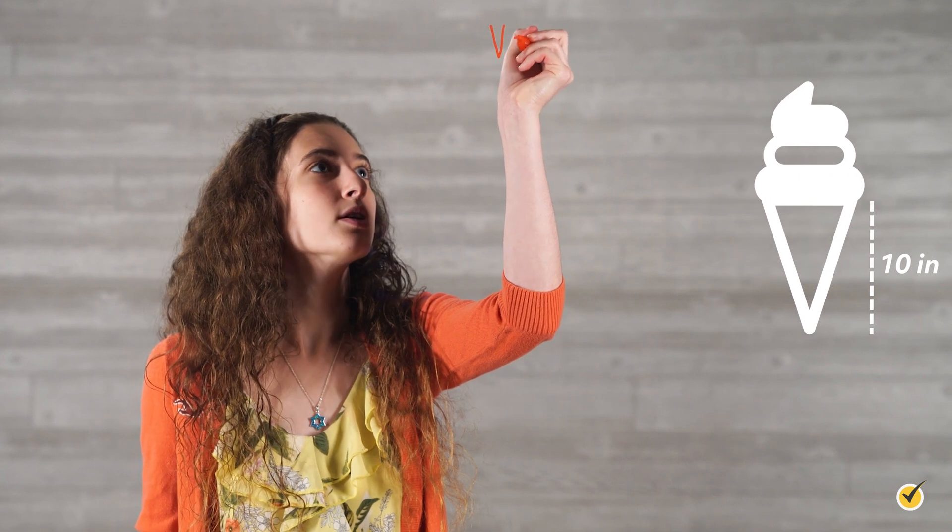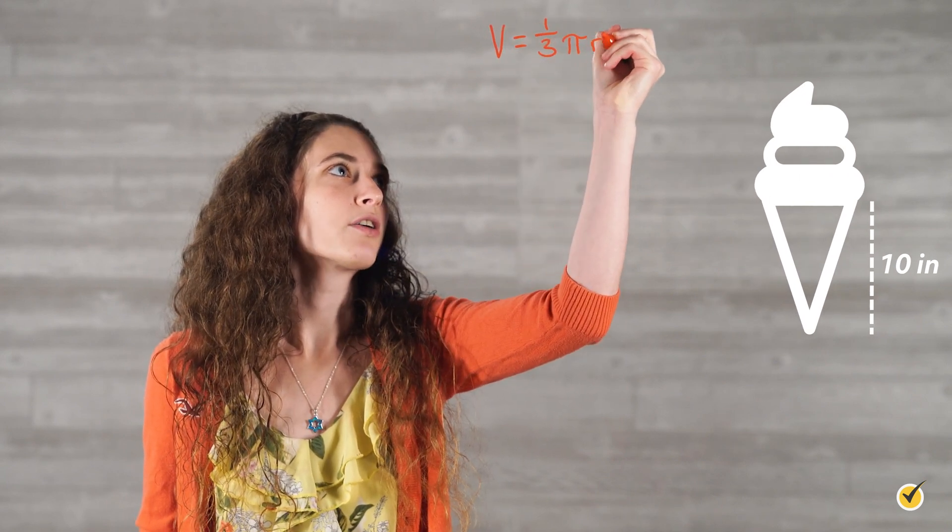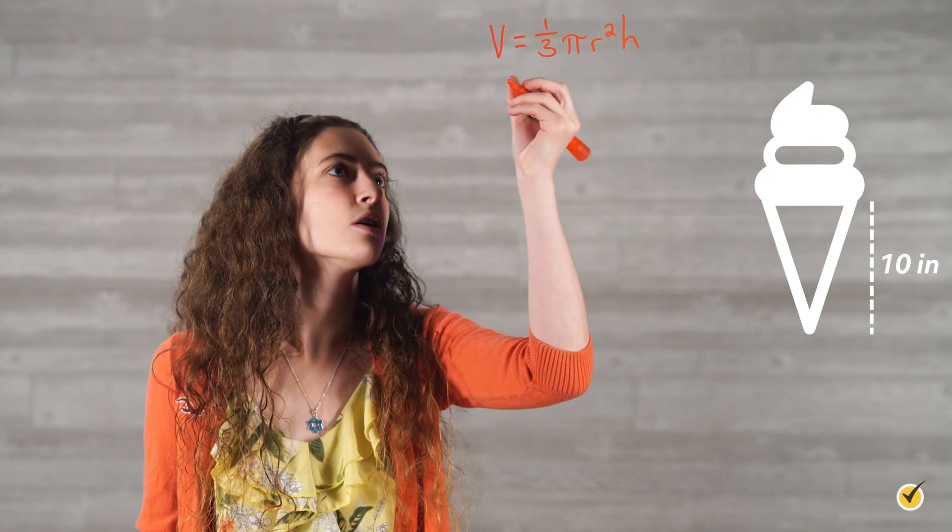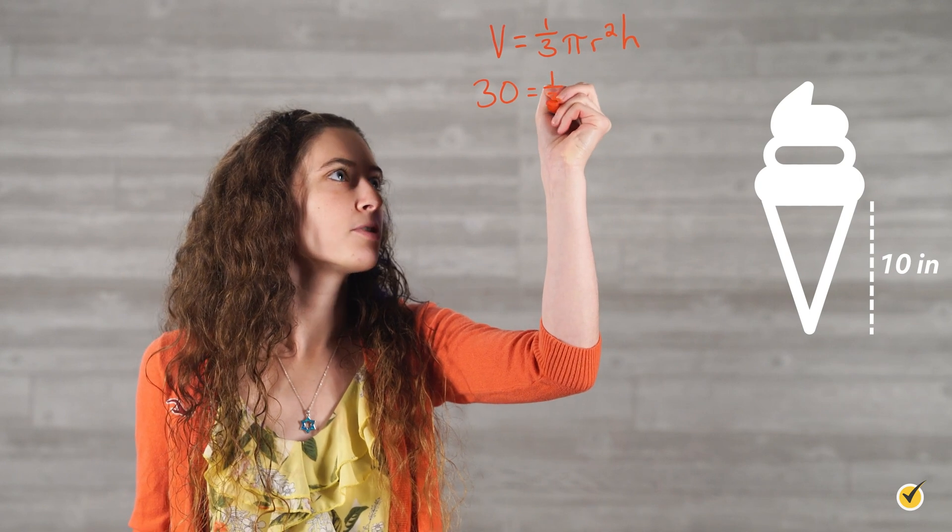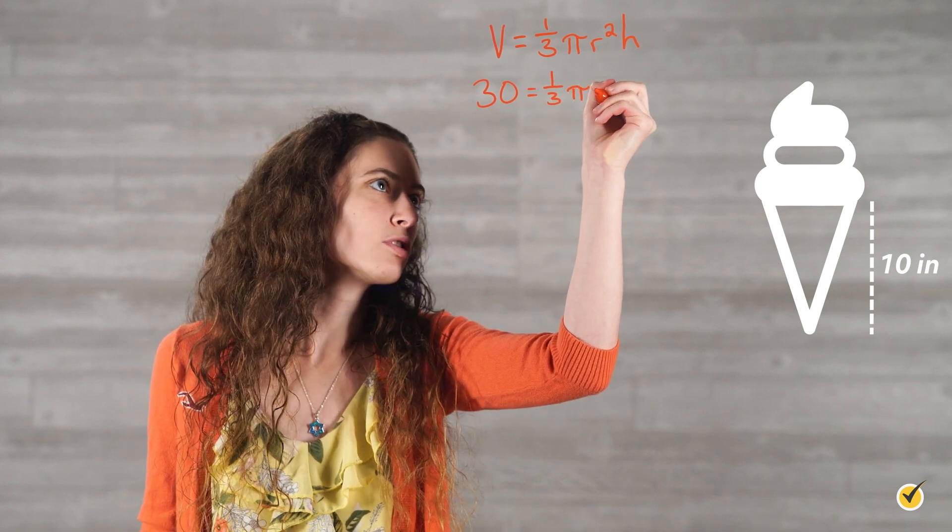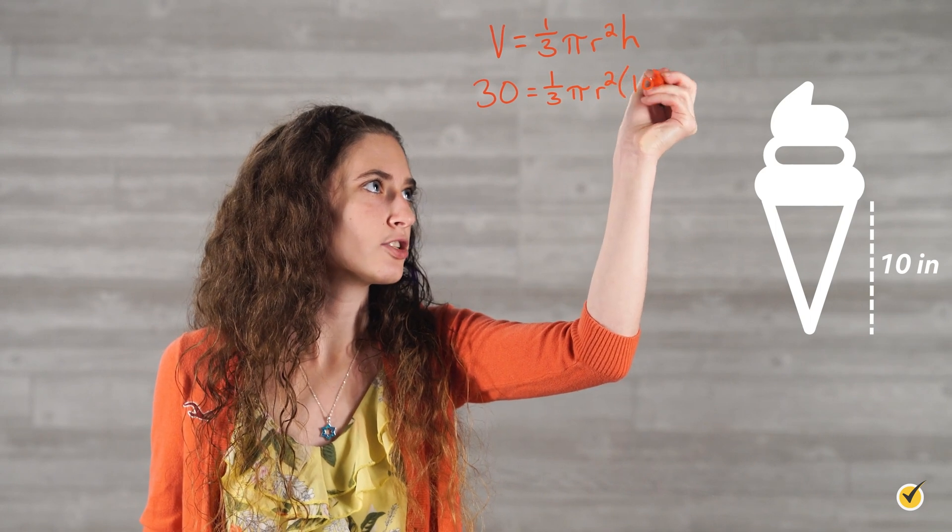Volume is equal to one-third pi r squared h. Our volume is equal to 30 cubic inches. One-third pi stays the same. We're looking for r, so we're going to leave that as r squared. And h is 10 inches.